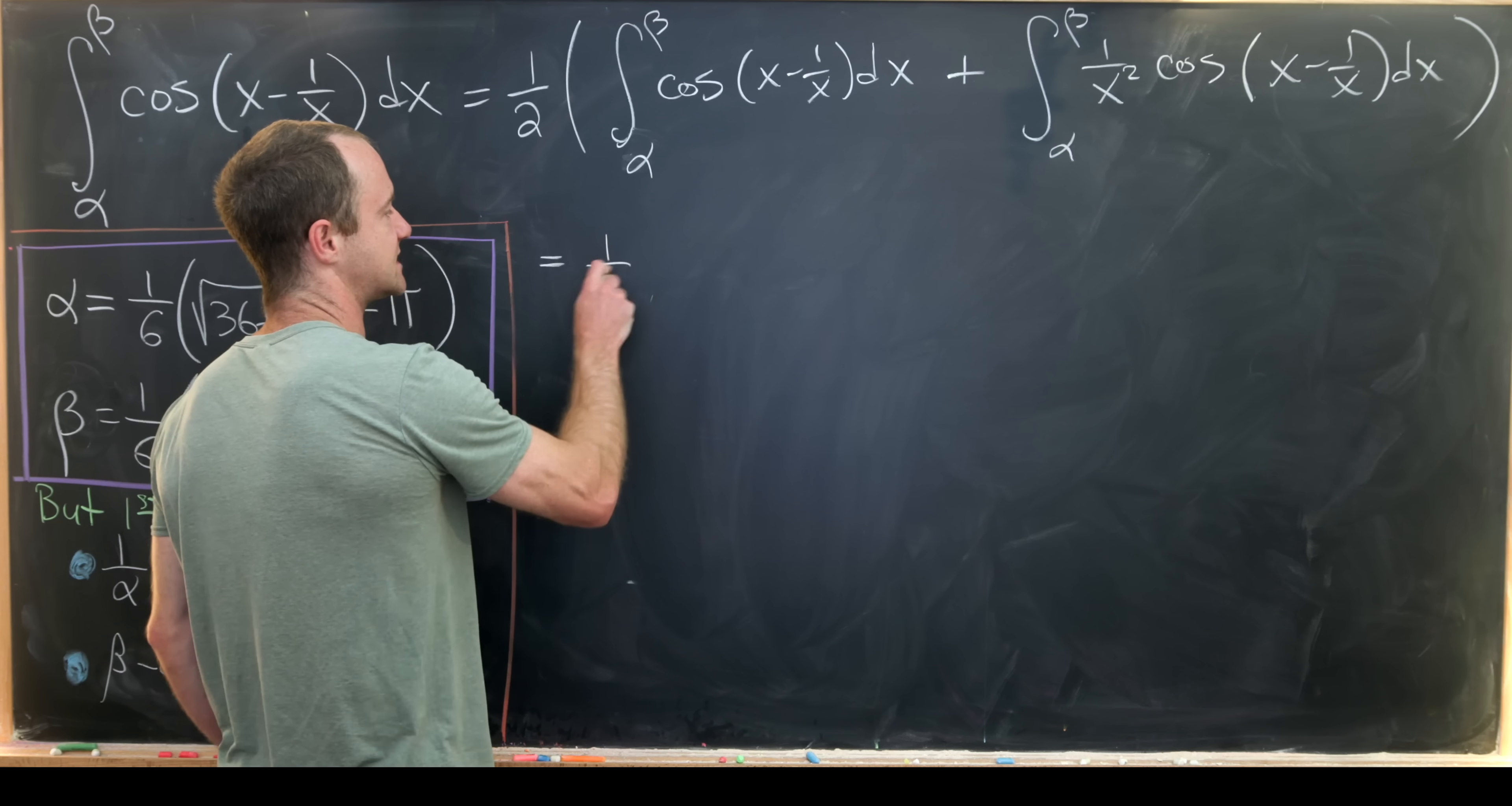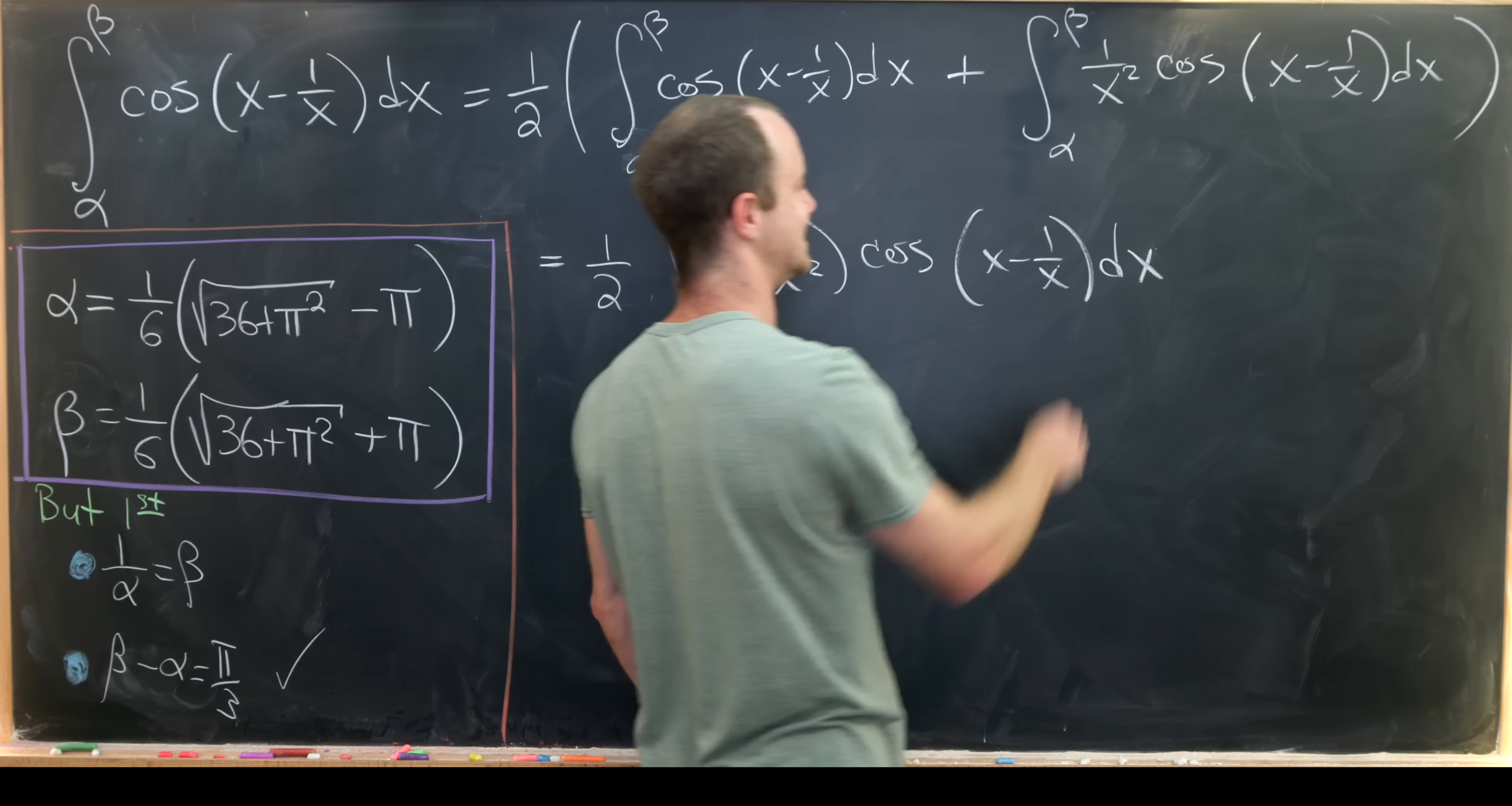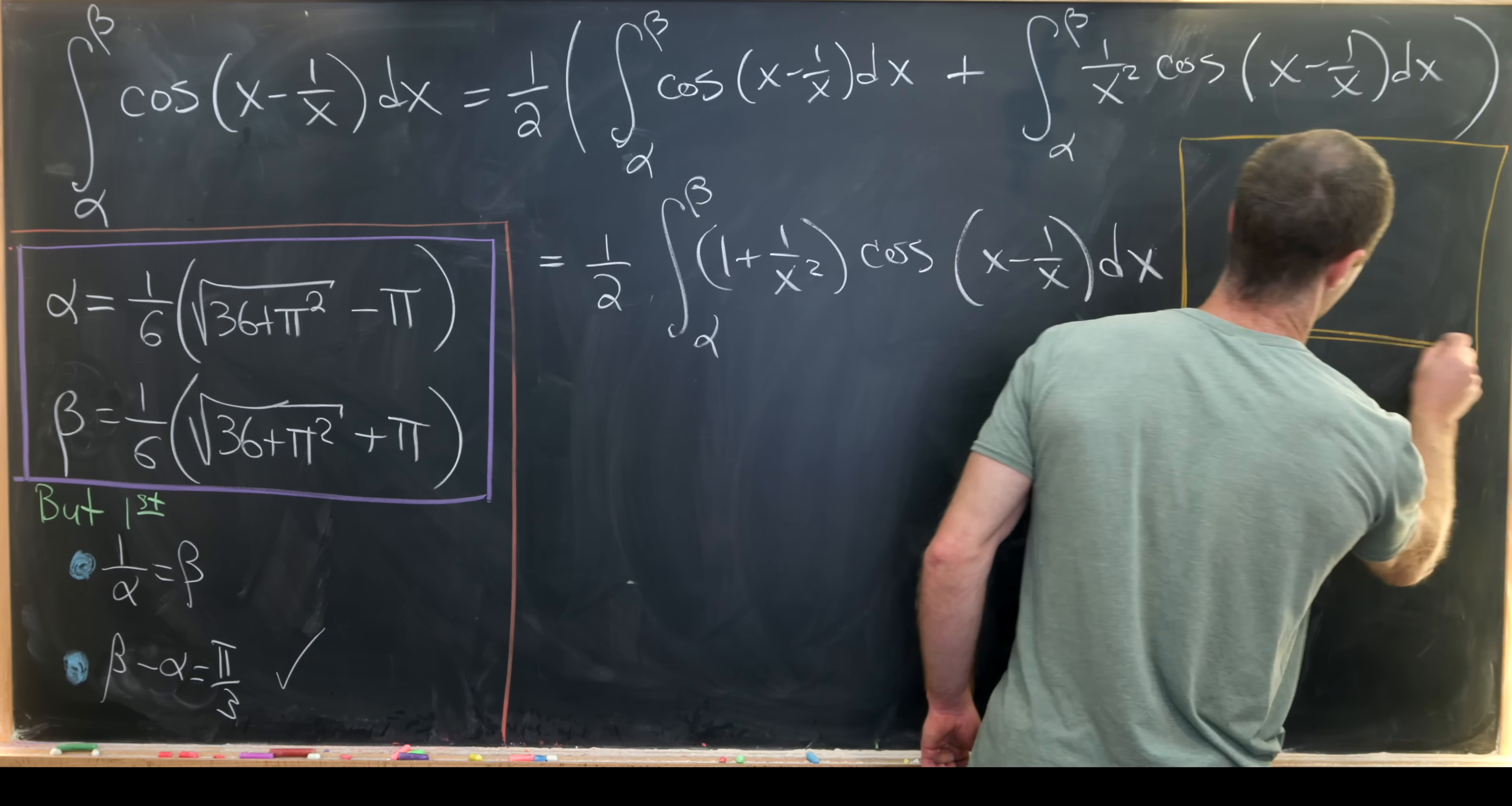So this really just amounts to the fact that the number 1 is equal to half times 2 given the fact that those two have the same value from what we just showed. Okay so now we can write this as one half and then we'll have the integral from alpha up to beta of 1 plus 1 over x squared times the cosine of x minus 1 over x dx.